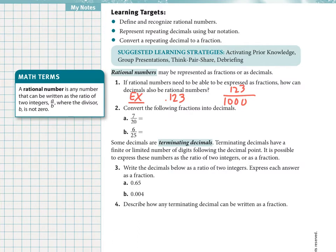Number two here, can we convert the following fractions into decimals? We did this in the previous section. Just do a division on a calculator. Seven divided by 20 is 0.35, and six out of 25 is going to be 0.24.